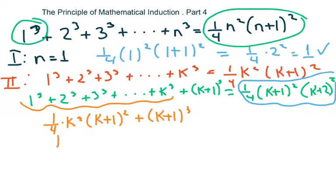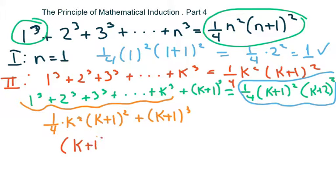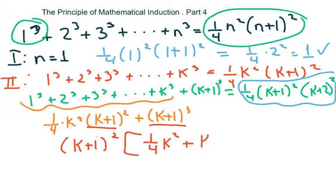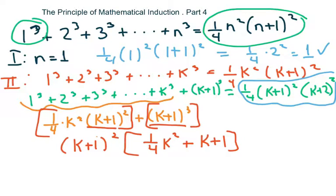This all equals (k plus one) squared — I'm factoring out (k plus one) squared because it's in both parts. When I factor it out, I'm left with one-fourth k squared plus (k plus one). I took both pieces and factored out (k plus one) squared because that's their greatest common factor.